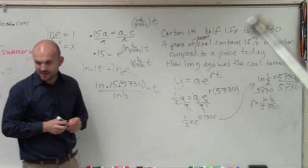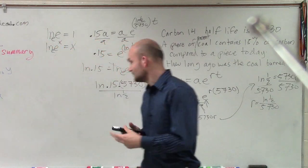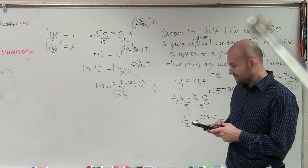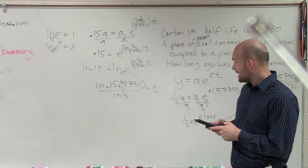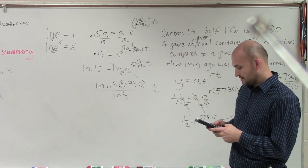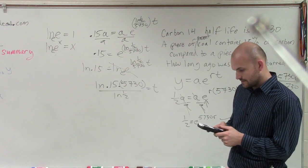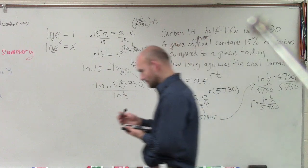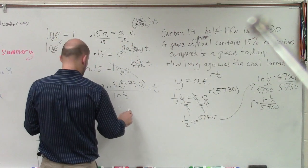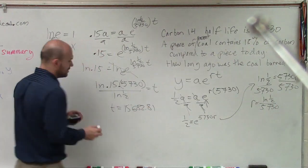So now we just need to evaluate this. So what I'll do is I'll take my nice little handy-dandy calculator. And I'll do LN of 0.15 times 5,730 divided by LN of 0.5. And I get T equals 15,682.81.